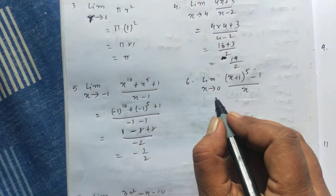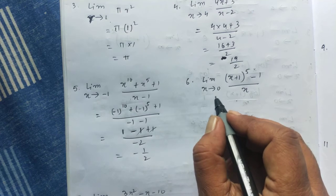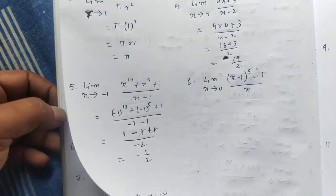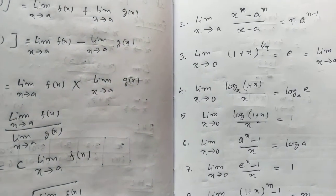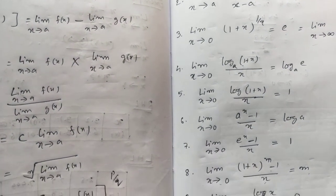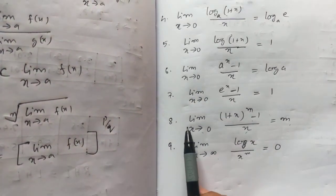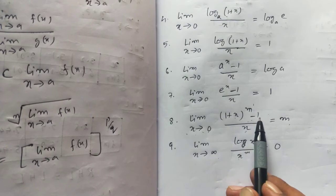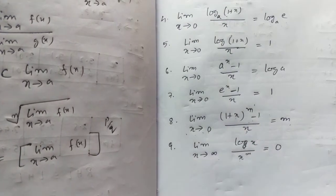Let's put the value here. If I put 0, it becomes 0. So this involves x + 1. The formula is: limit x tends to 0 of (1 + x)^m minus 1 by x equals the power m.